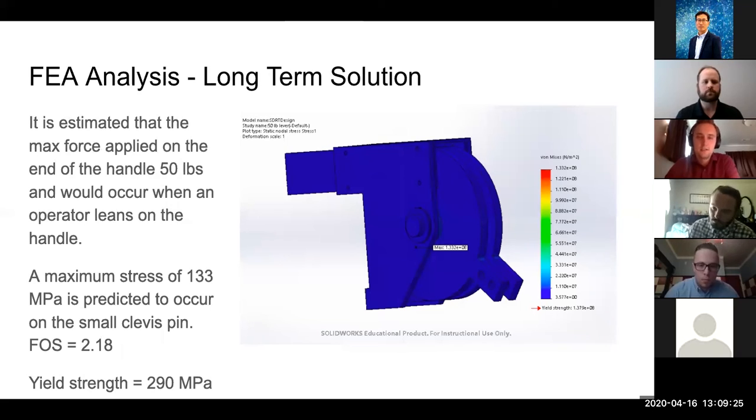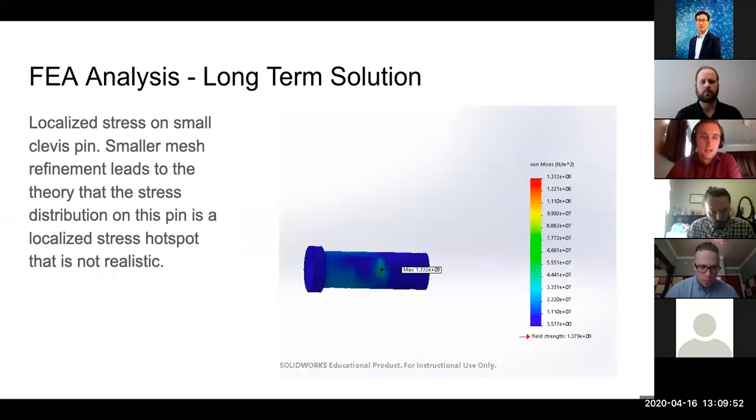The FEA analysis of the long-term solution showed that we had a maximum stress of 133 megapascals. This was done under the assumption that the maximum force applied at the end of the lever would be about 50 pounds. This gives us a factor of safety of about 2.18 using a yield strength of 290 megapascals. This is the location of the maximum stress in the assembly.